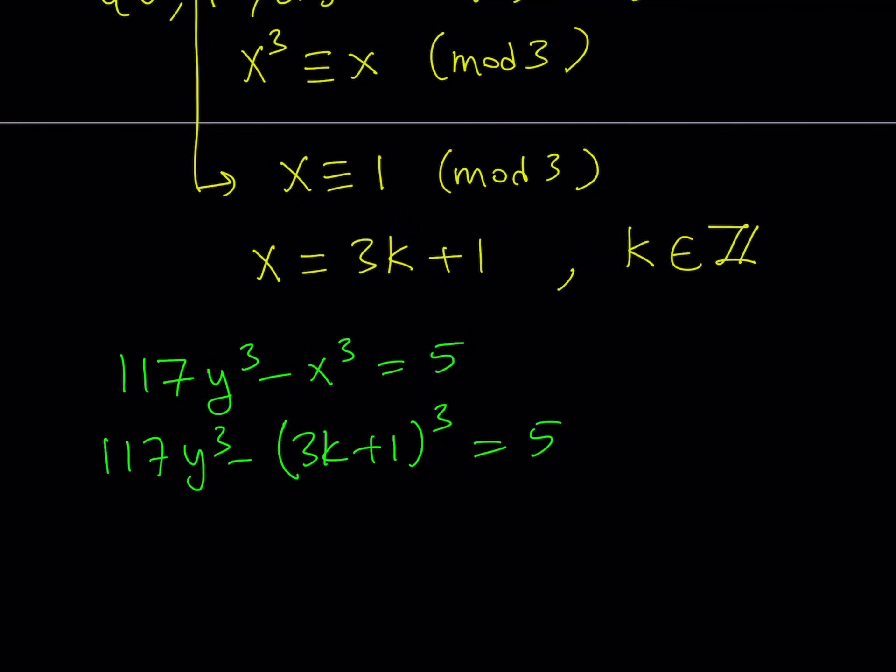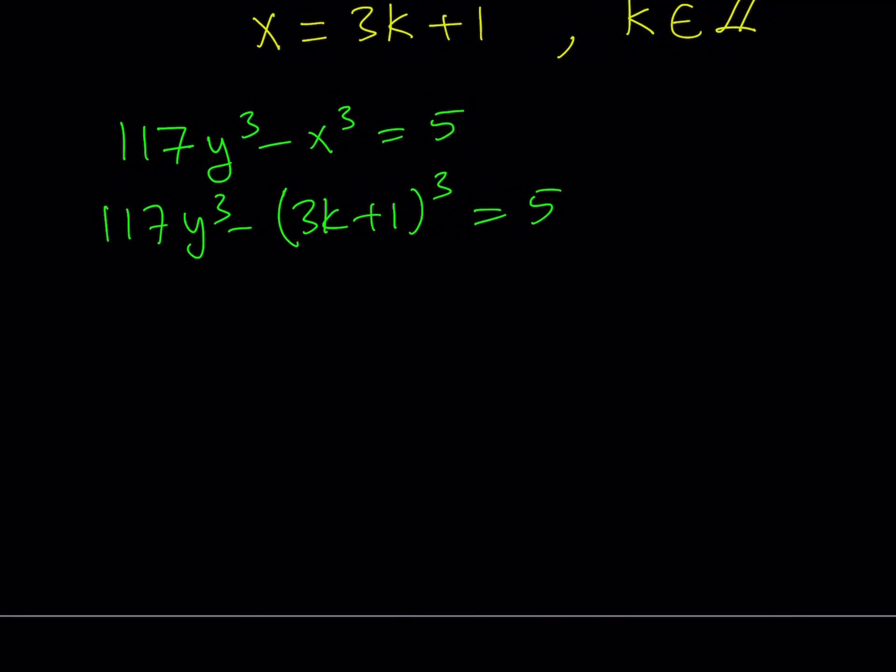And, of course, I have to cube it. And, then, simplify this. Let's simplify this expression. 117y³ - 27k³ - 27k² just by using the Binomial theorem on the cube. You can just write it like this. Minus 9k - 1 = 5.